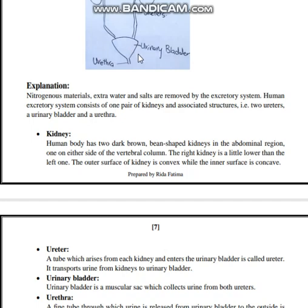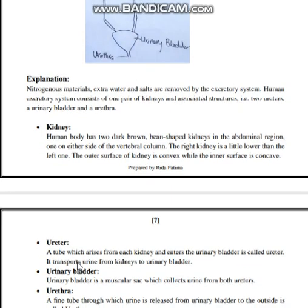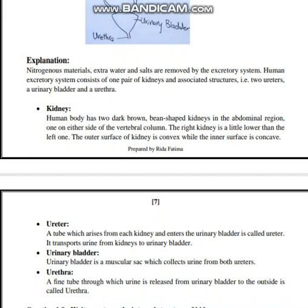The urinary bladder is a muscular sac which collects the urine from both the ureters. It is used for the storage of urine. The urethra is a fine tube through which the urine is released from the urinary bladder to the outside. Students, you have to write this question and learn it by heart.